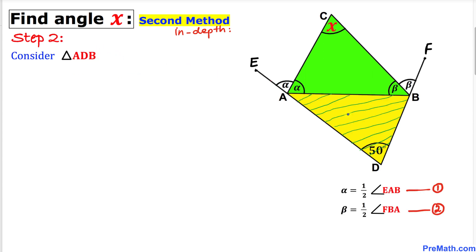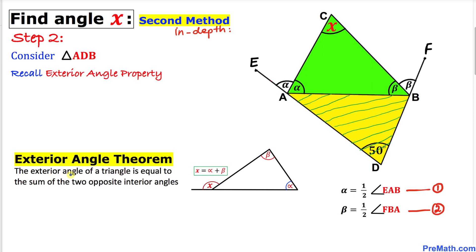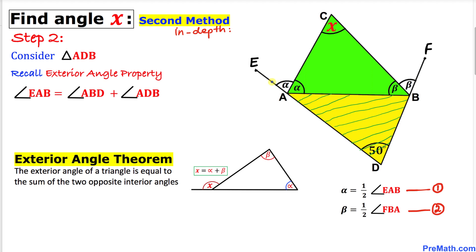Here is our next step. Let's focus on the yellow triangle ADB and recall the exterior angle property. The exterior angle theorem states that the exterior angle of a triangle equals the sum of the two opposite interior angles. In our case, angle X is the exterior angle, equal to the sum of the two opposite interior angles alpha and beta. So X equals alpha plus beta.